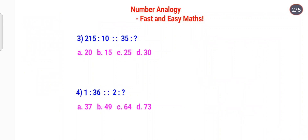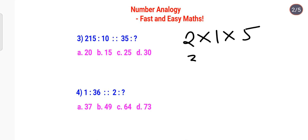Now let's look at the next one: 2 and 5 is to 10. When you have something like this it becomes a bit confusing, because 2 and 5 is not close to any squares or prime numbers. What we do here is multiply all the digits: 2 × 1 × 5 gives 10. Similarly for 3 and 5, we do 3 × 5 and get 15 — so option B is your answer.